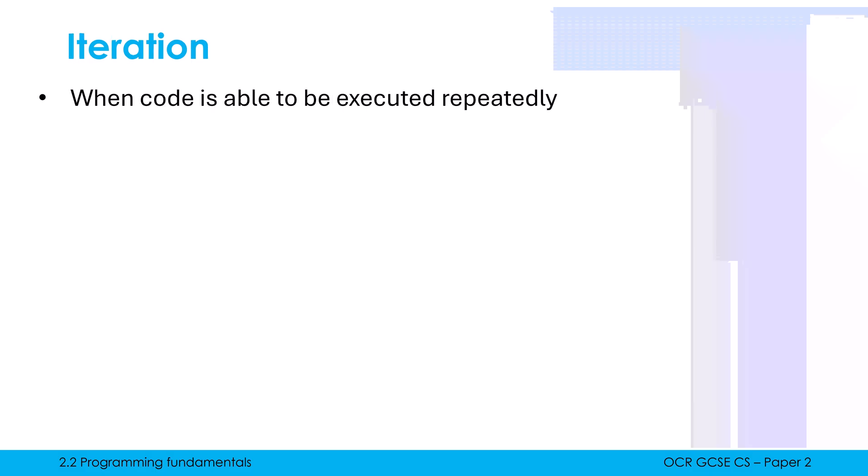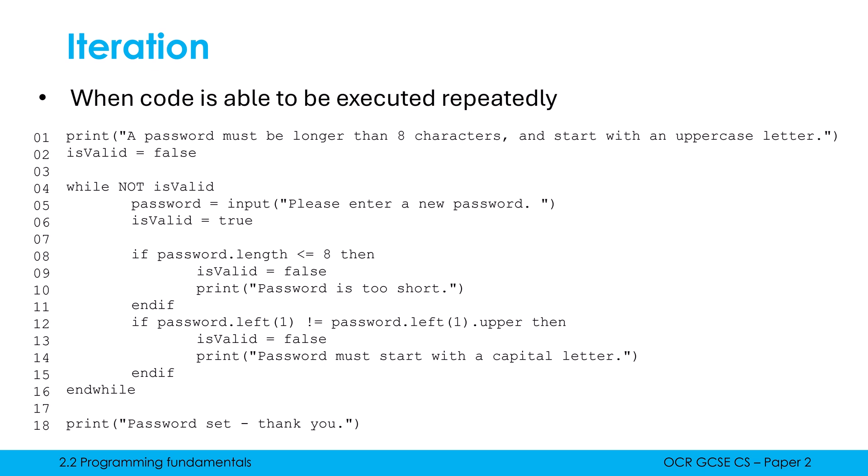The third and final basic building block is iteration. So iteration is when code is able to be executed repeatedly. And here is a fairly chunky example, where we have iteration present, we also have selection present, and we also have sequence present. That's an example of where you would use a combination of different constructs in a complicated program. So can you see where we first have iteration?